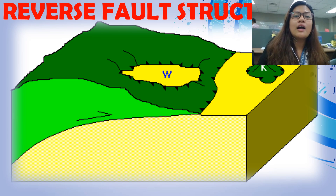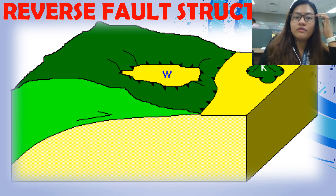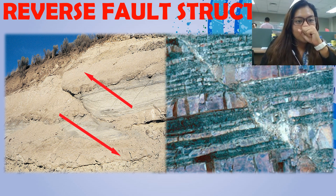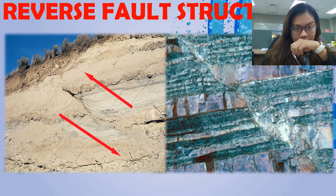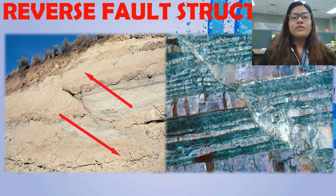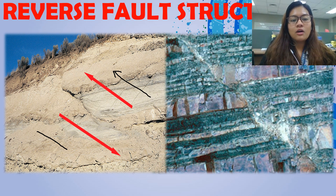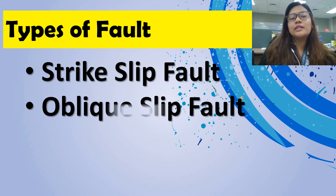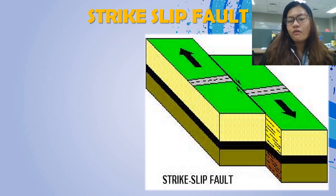Right now we have an overview of the following reverse fault structure, showing the different kinds of movements — this direction going up and this one going down. So the last two types of faults are strike-slip fault and the oblique slip fault.